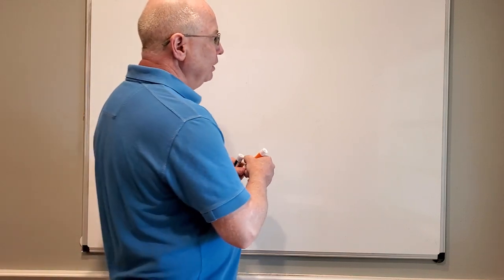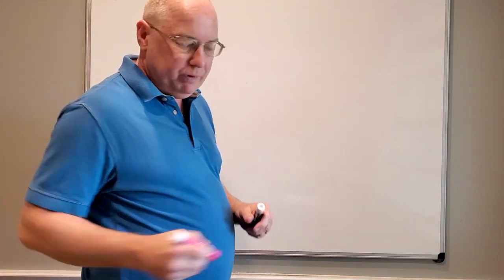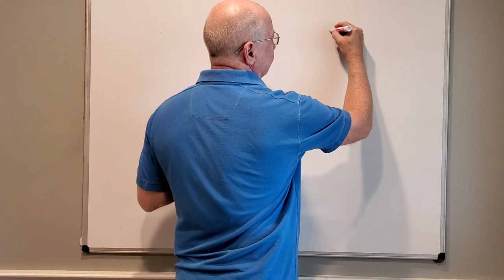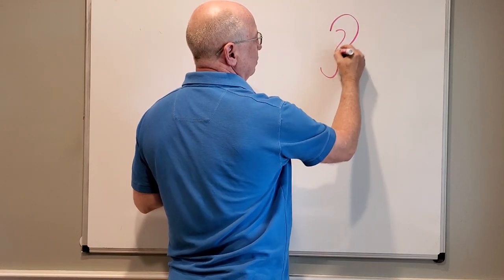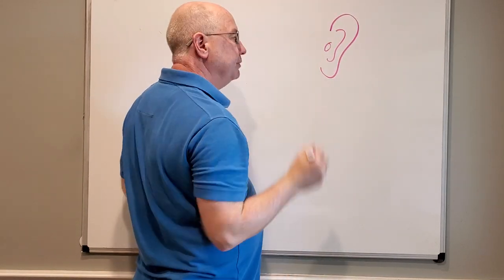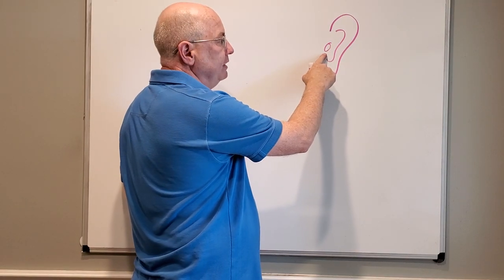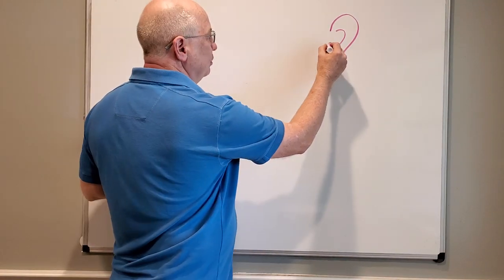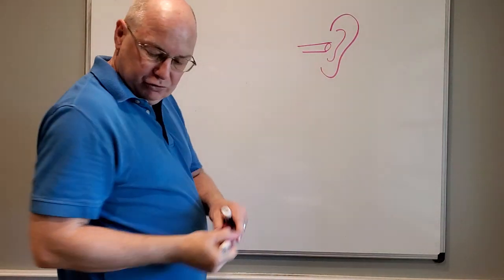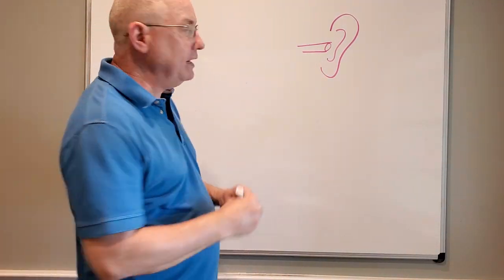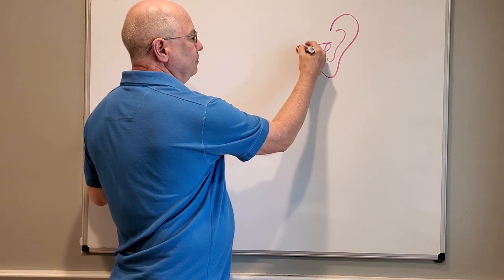When we look at the external part of the ear, we'll see the pinna or auricle, which is the part of your ear that we typically call the ear. The opening is called the external auditory meatus. There's a tube that runs from the external auditory meatus up to a structure called the tympanic membrane, which is your eardrum.